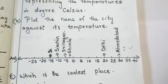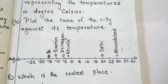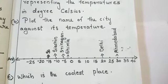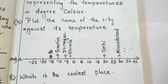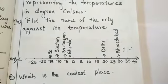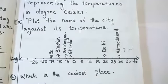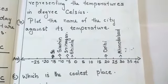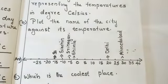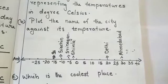You observe Shimla negative 2 degree Celsius. So, it is left to 0 negative. Srinagar negative 5. It is also left to 0. Siachin negative 10 degree Celsius left to 0. Understood?